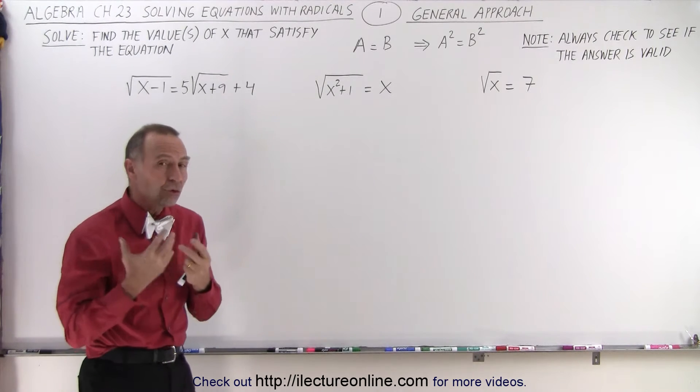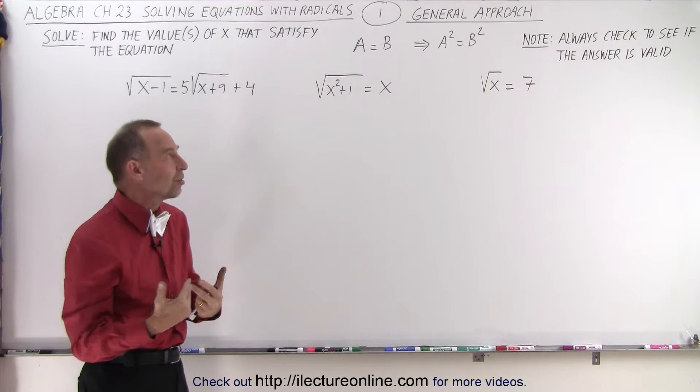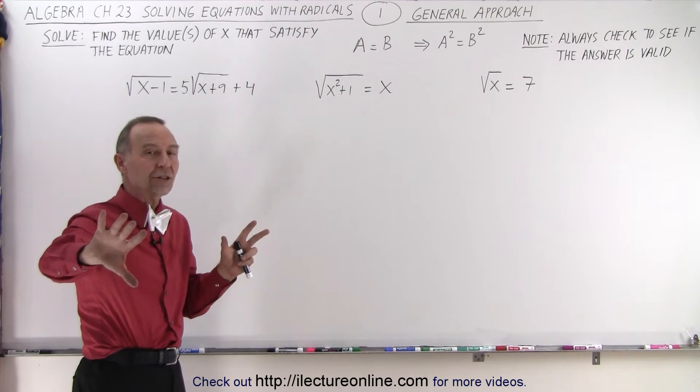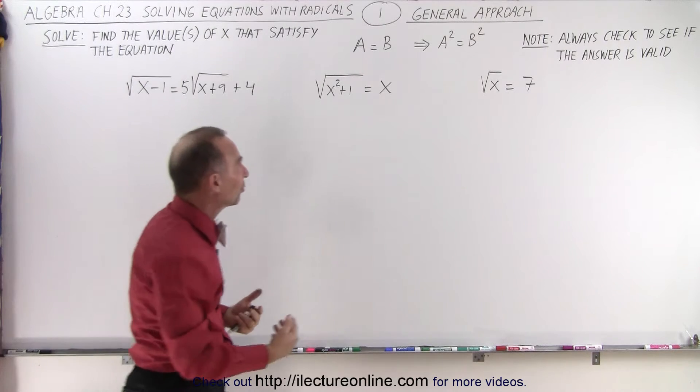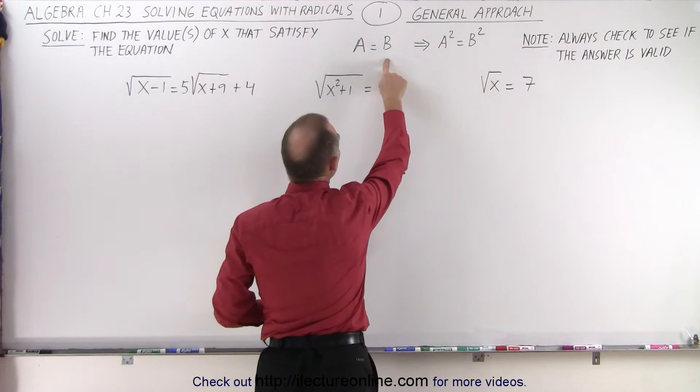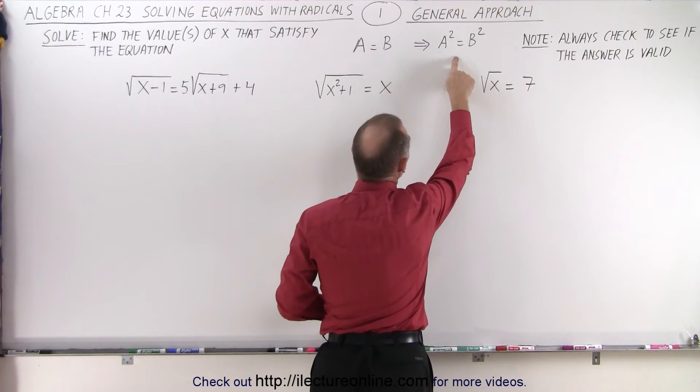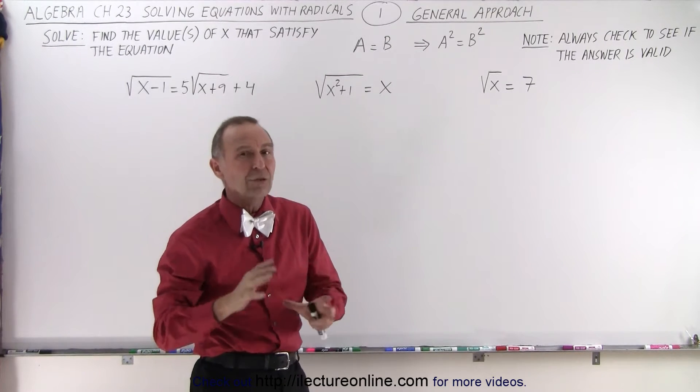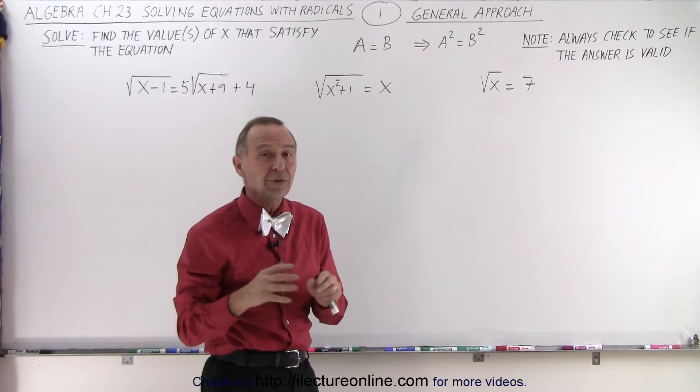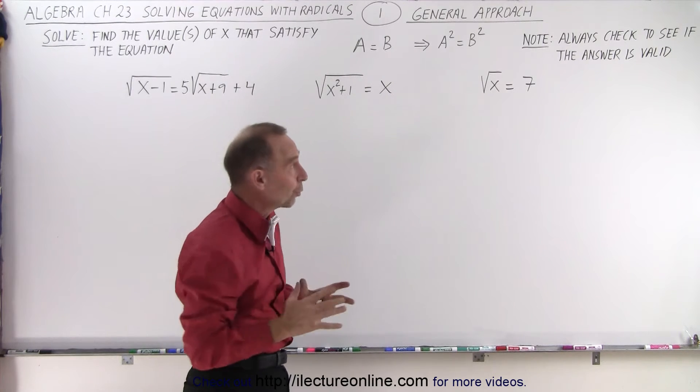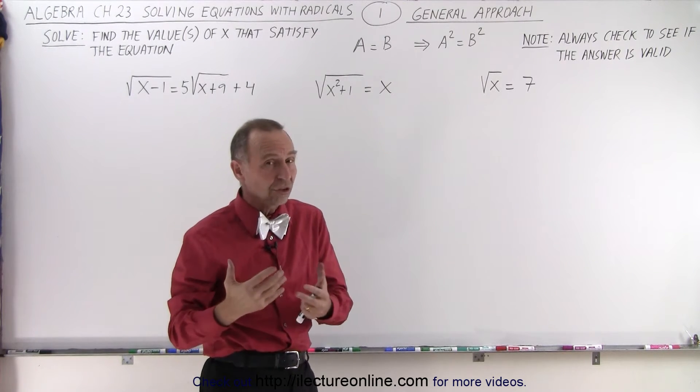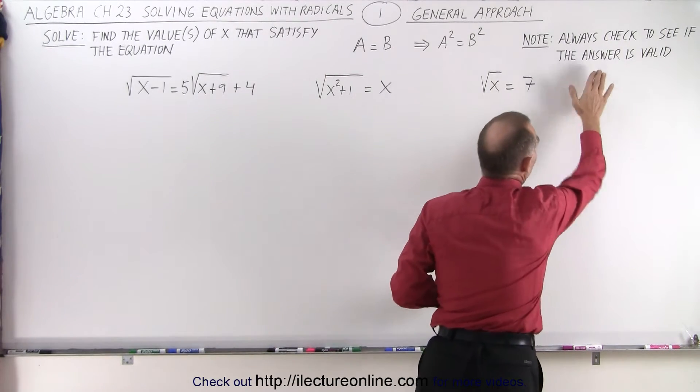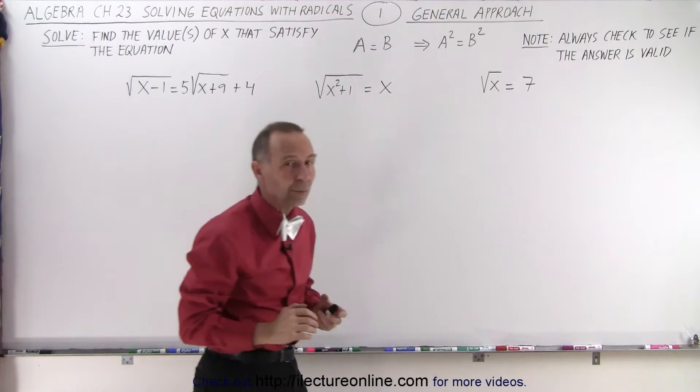The general approach when there are radicals in the equation is to separate the radicals on one side and all the non-radicals on the other side, then square both sides. When a equals b, we can say that a² equals b². Now when we do that, sometimes we may introduce extra solutions that do not satisfy the original equation. Therefore, we should always check to make sure that the answer is valid.